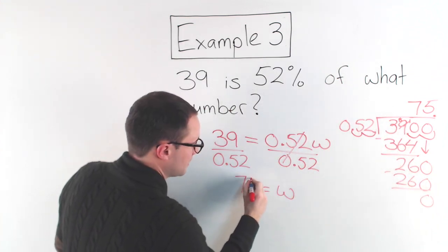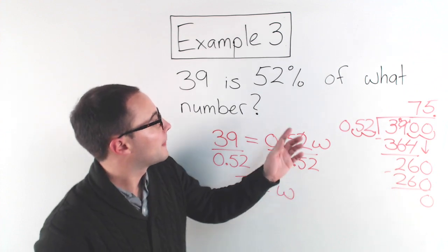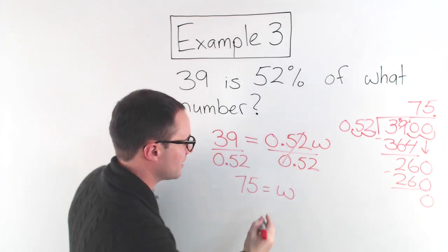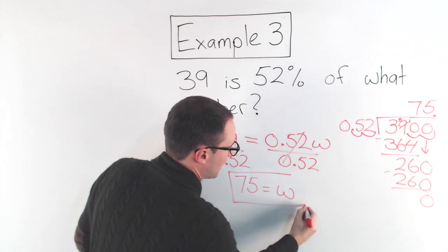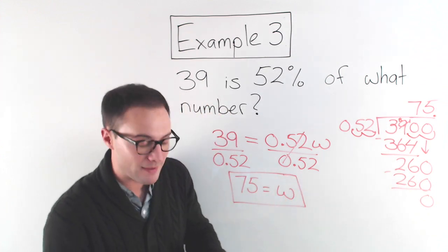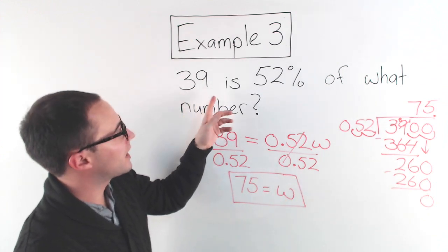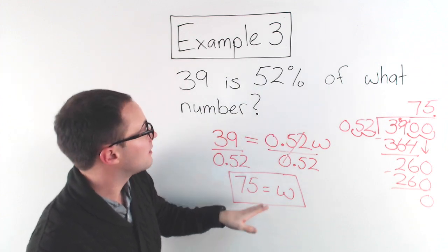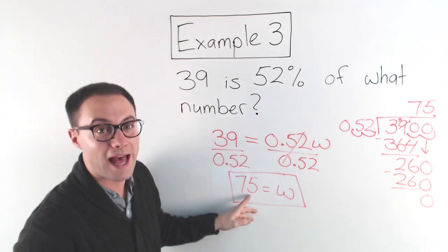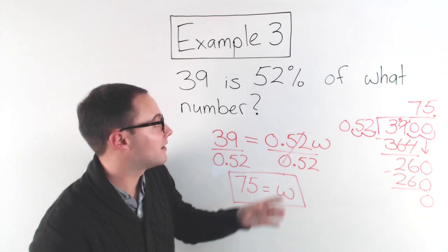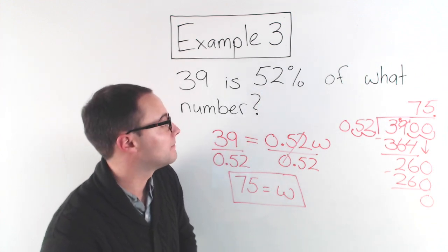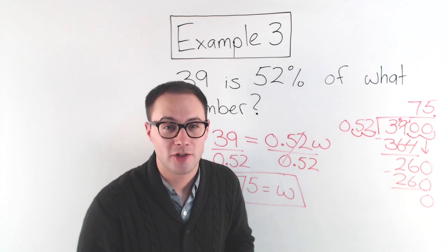And remember, this is what number. So I don't need to do anything to that. That is just 75. And if we want to think, does that make sense? So 39 is 52% of 75. Yeah, 39 is about half of 75, and 52% is just about half, just about 50%. Good. Here's some to try on your own.